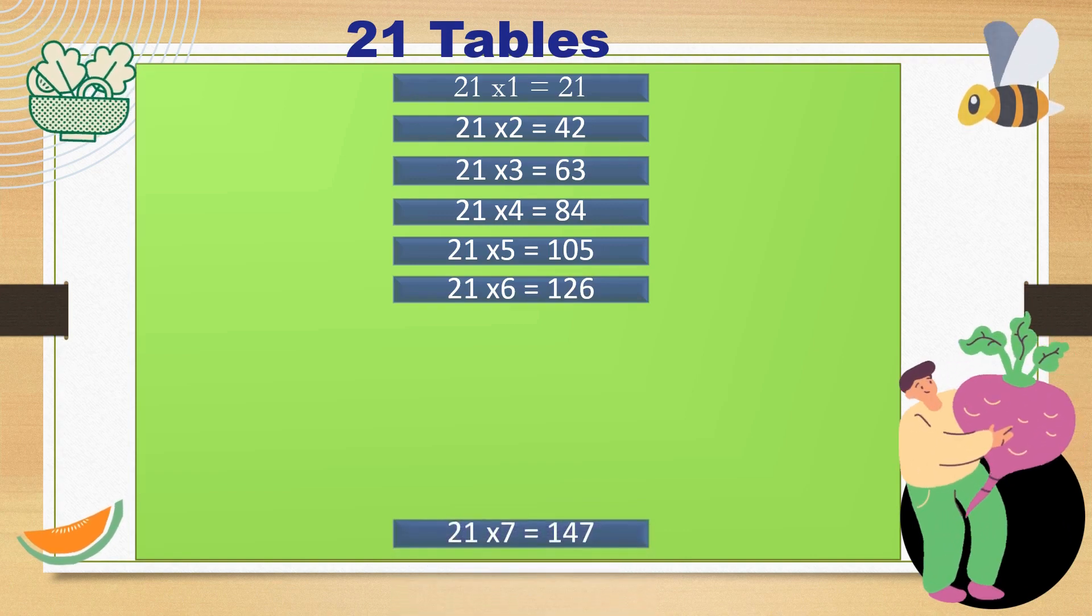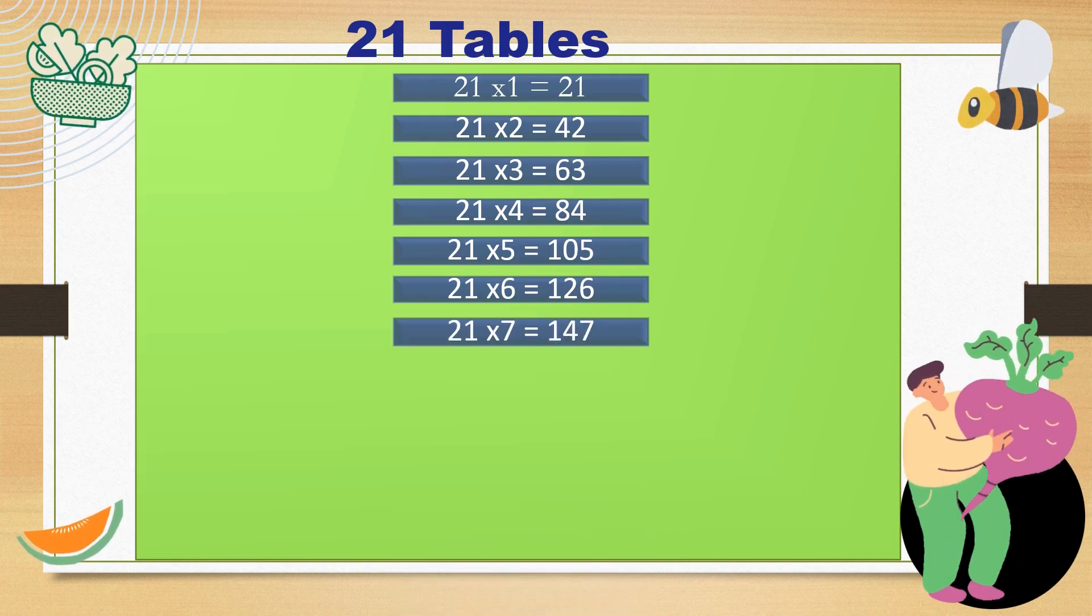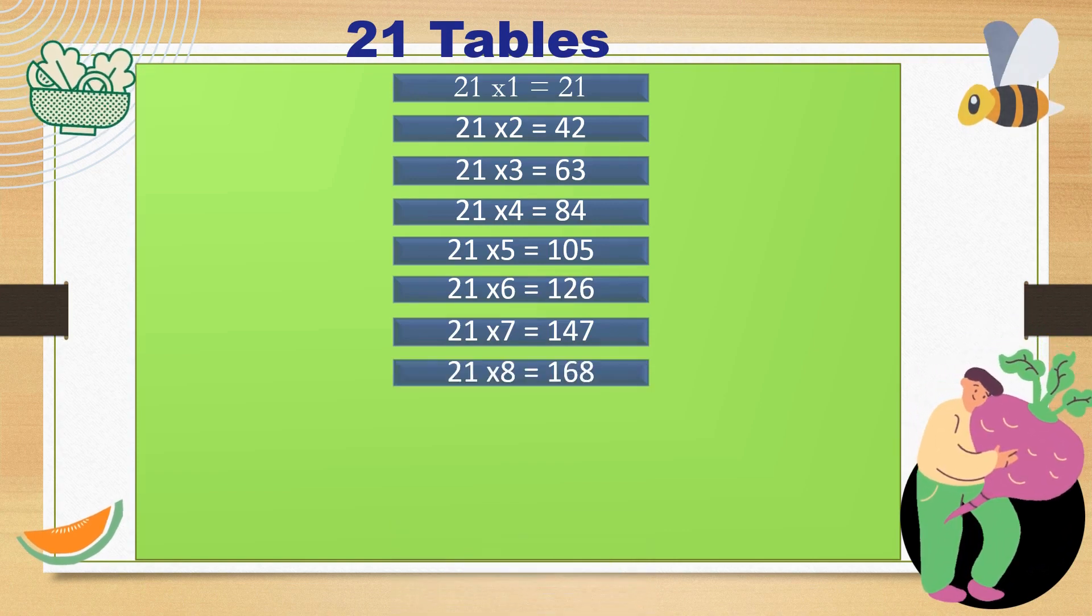Climbing higher, aiming to score. 21 times 5 is 105. With these numbers, our math skills thrive.